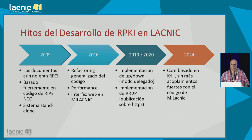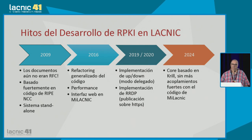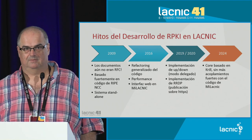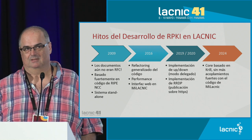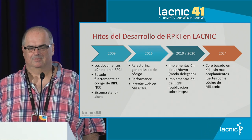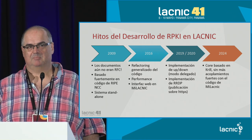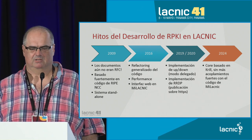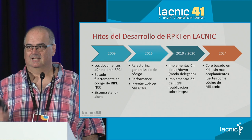LACNIC's RPKI evolved over many years — it is more than 15 years old since the first versions. The first developments were done before the RPKI documents were RFCs; they were still drafts. RIRs were committed to the IETF and IAB to start producing running code. LACNIC was donated code by RIPE, which made it possible to launch a system — I believe it was January 1st, 2011 — and the first ROAs were created by Telecom Argentina.